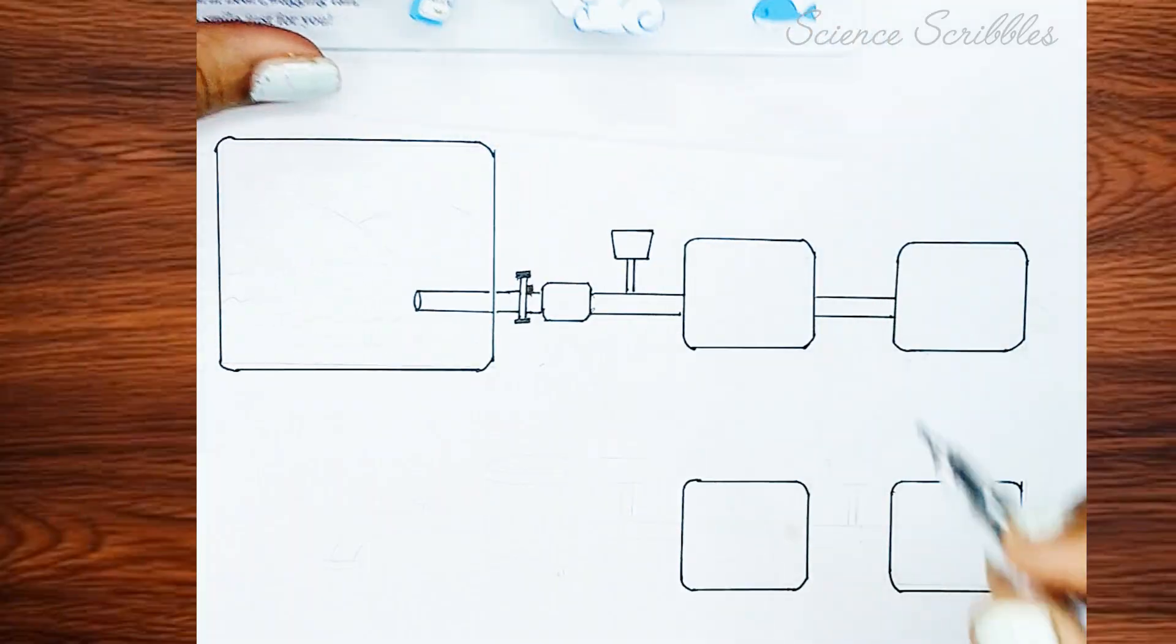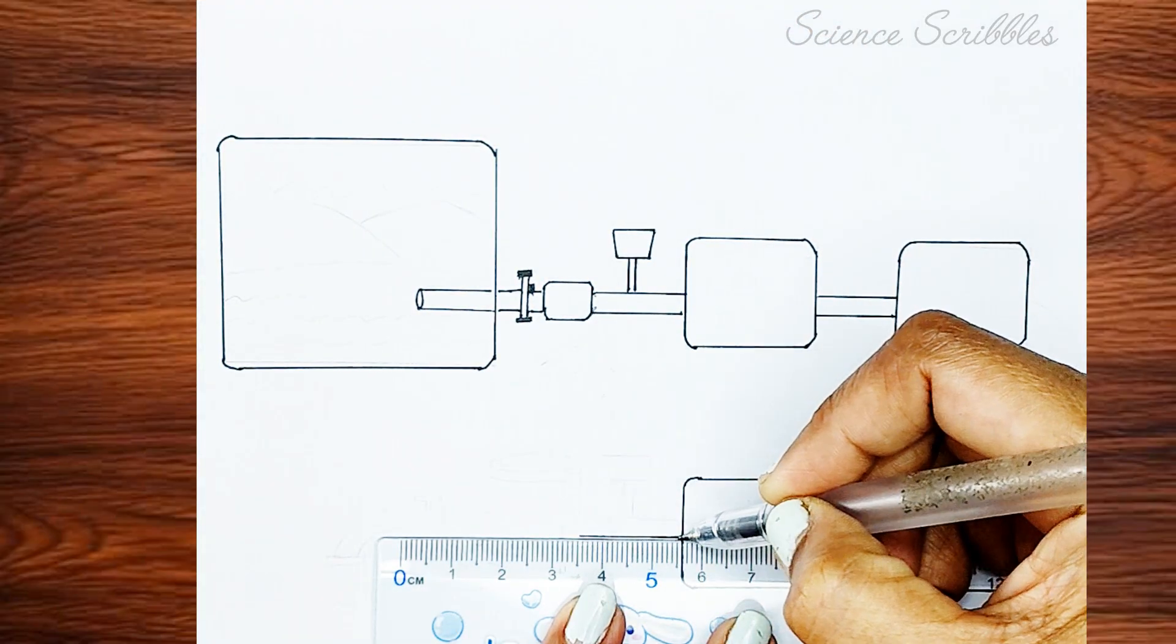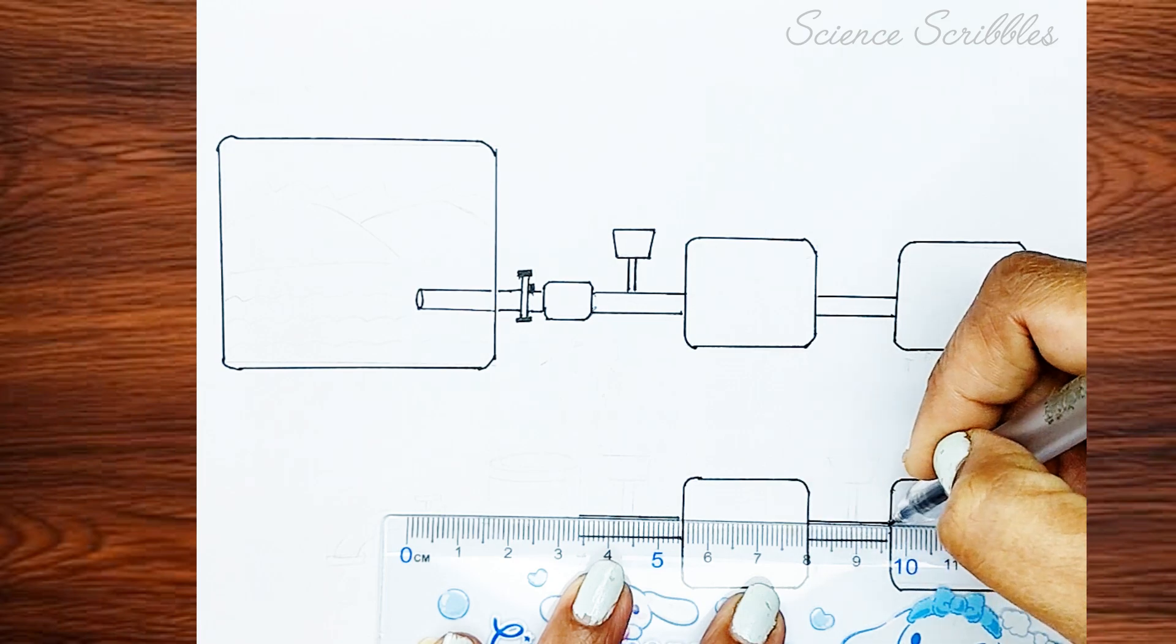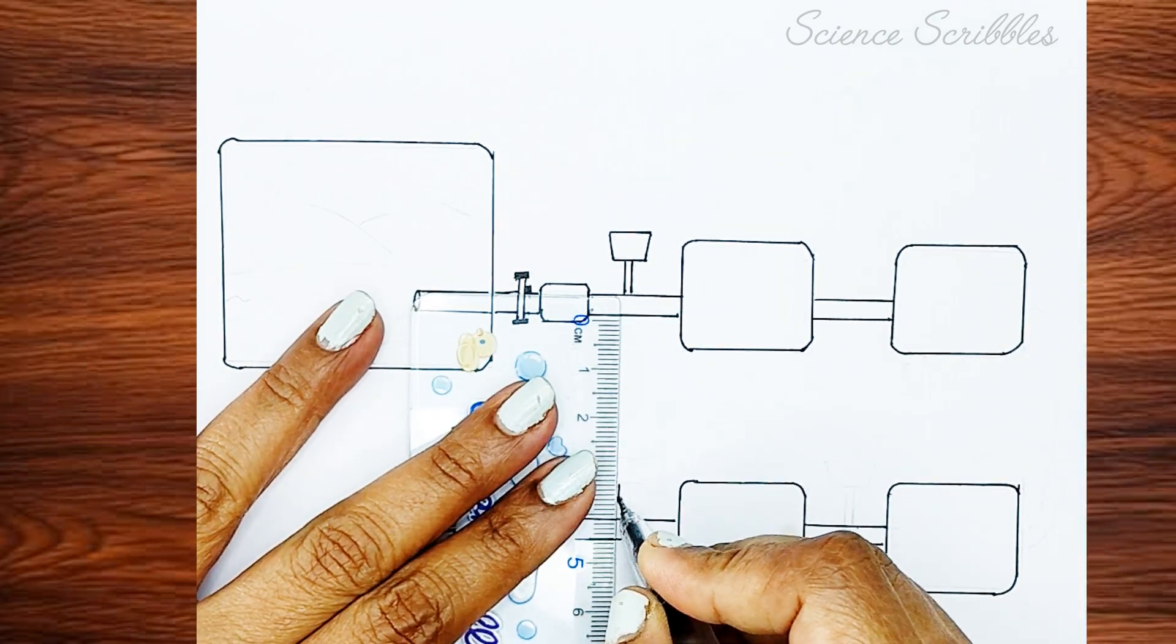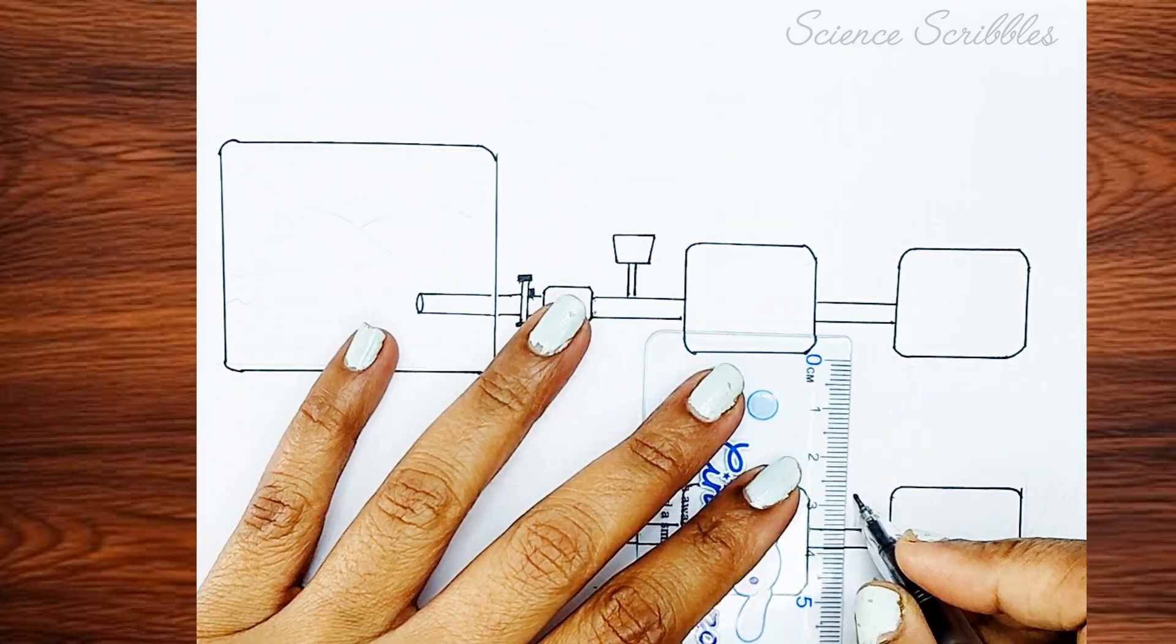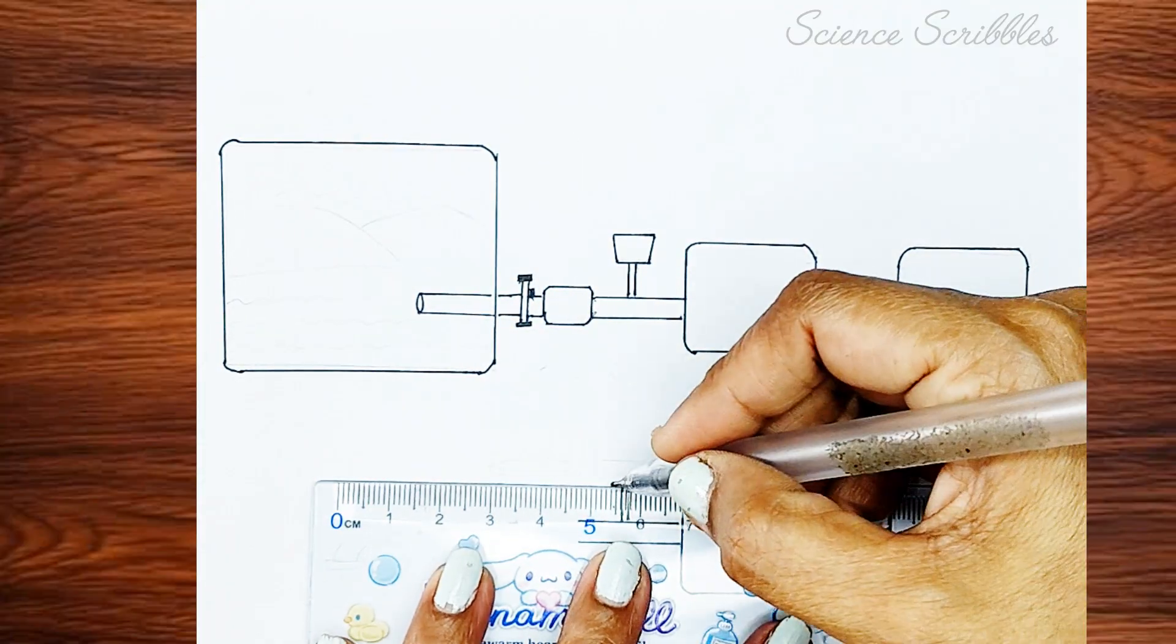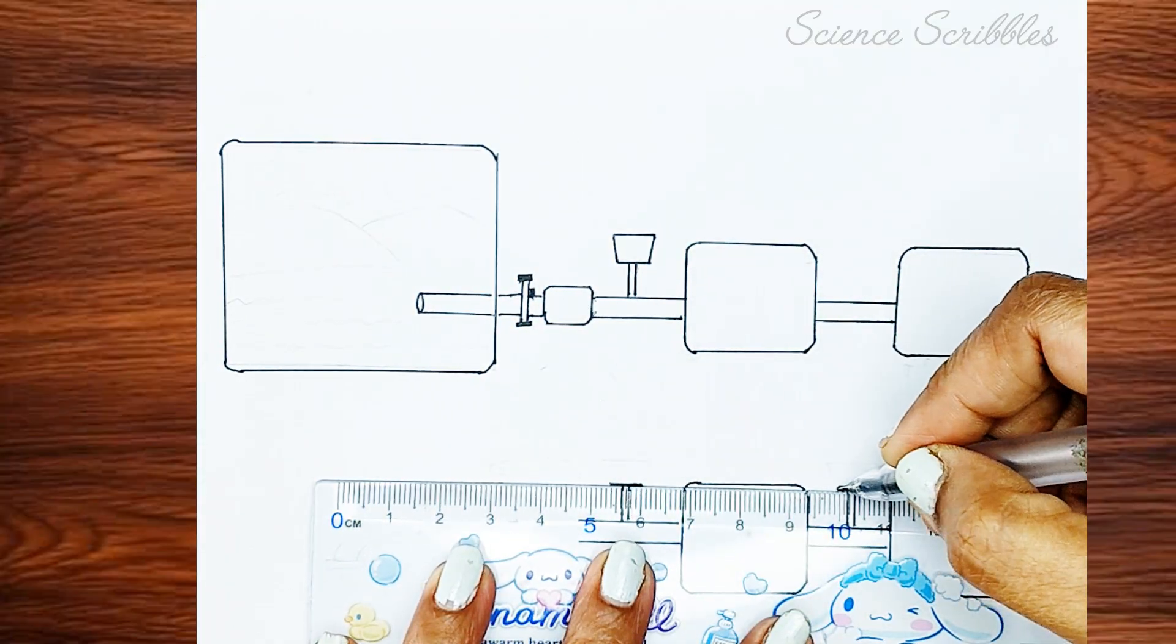Meanwhile, we will draw the pipelines for the next stages of the process. These pipelines will connect the rectangles representing different treatment units. Next, we will draw cup-shaped units for addition of chemicals to the water. So, let's draw two more cup-like units.